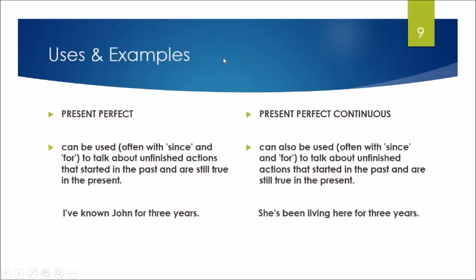Now we are going to check the uses and examples. In this verb function you can see that we use the present perfect and the present perfect continuous when we talk about unfinished actions that started in the past and are still true in the present. I've known John for three years. She has been living here for three years.